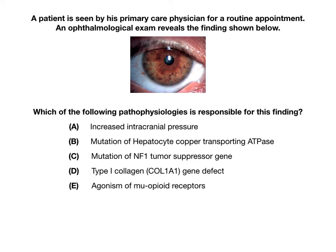A: Increased intracranial pressure. B: Mutation of hepatocyte copper transporting ATPase. C: Mutation of NF1 tumor suppressor gene. D: Type 1 collagen, COL1A1 gene defect. Or E: Agonism of mu opioid receptors.